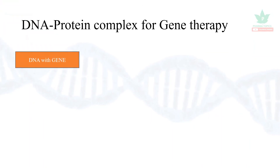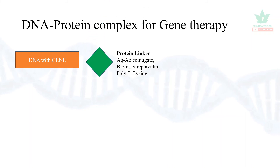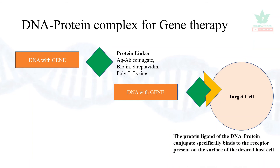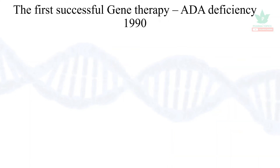The next method is the DNA-protein complex for gene therapy. The DNA with the good gene is taken and protein linkers are used — such as antigen-antibody conjugates, biotin-streptavidin, or poly-L-lysine. The DNA with the good gene attaches to the receptor on the target cells via the linker, delivering the good gene into the target cells.